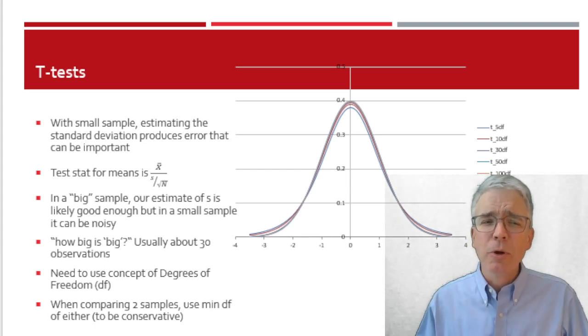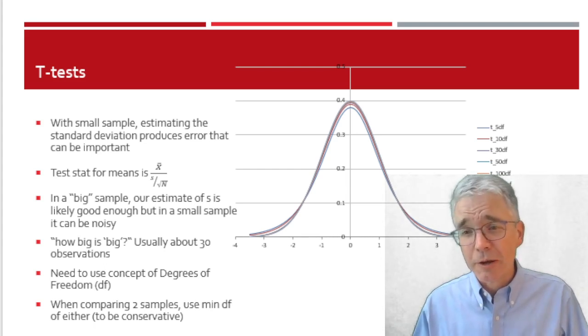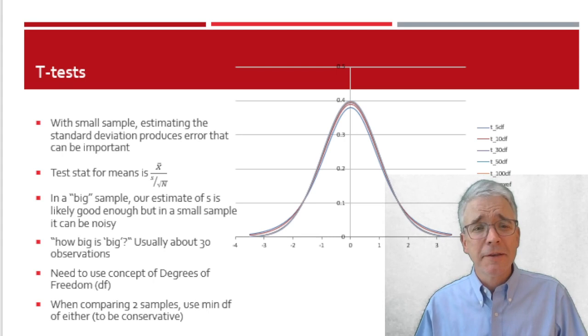Now, perhaps you're asking, how small is small? Just like our previous questions, how big is big? But for this case, we have a simple answer. 30. Typically, about 30 observations is a small sample. That will give us sufficient degrees of freedom.